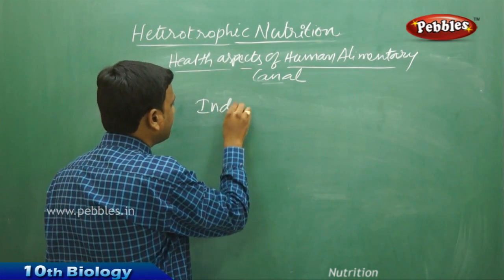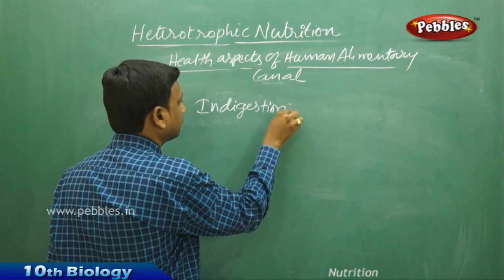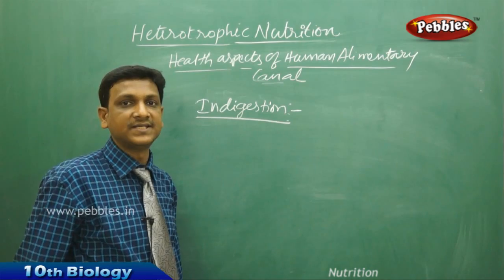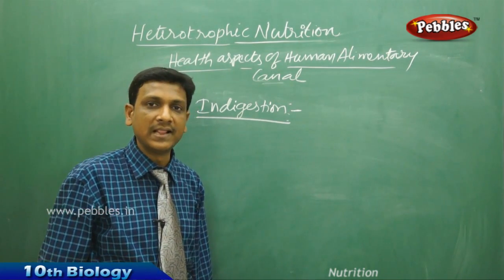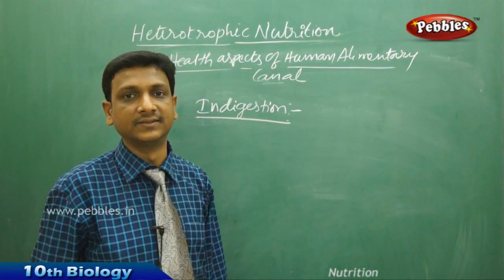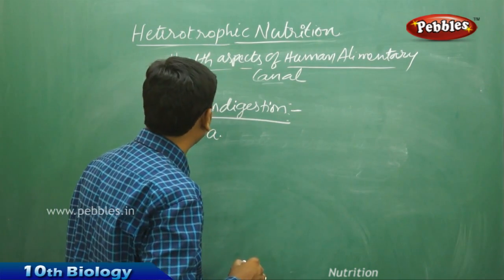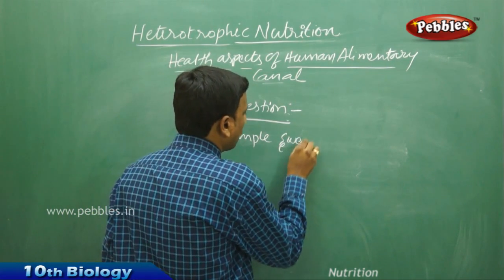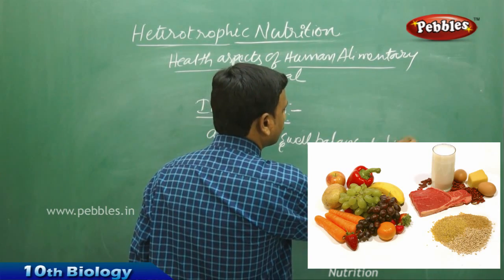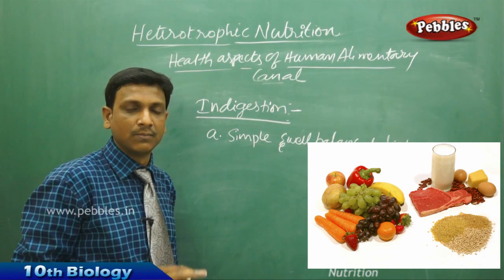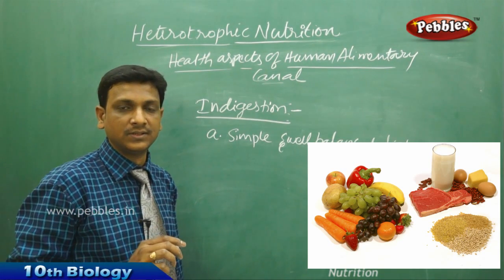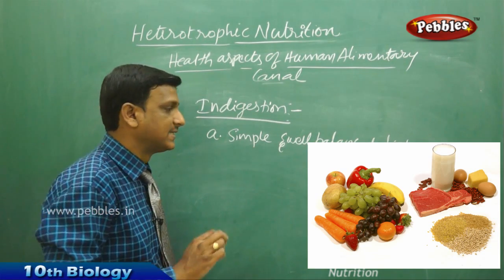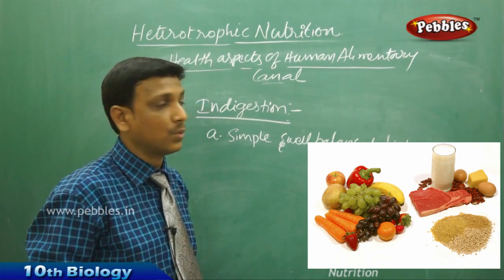Now let us look at indigestion — how it happens. Indigestion means that for some reason the digestive system fails to digest the food. Healthy people can avoid indigestion by following certain things. First, eating a simple and well-balanced diet — the food should not have excess fat or excess calories, and should contain a proper amount of fiber and be well-cooked.